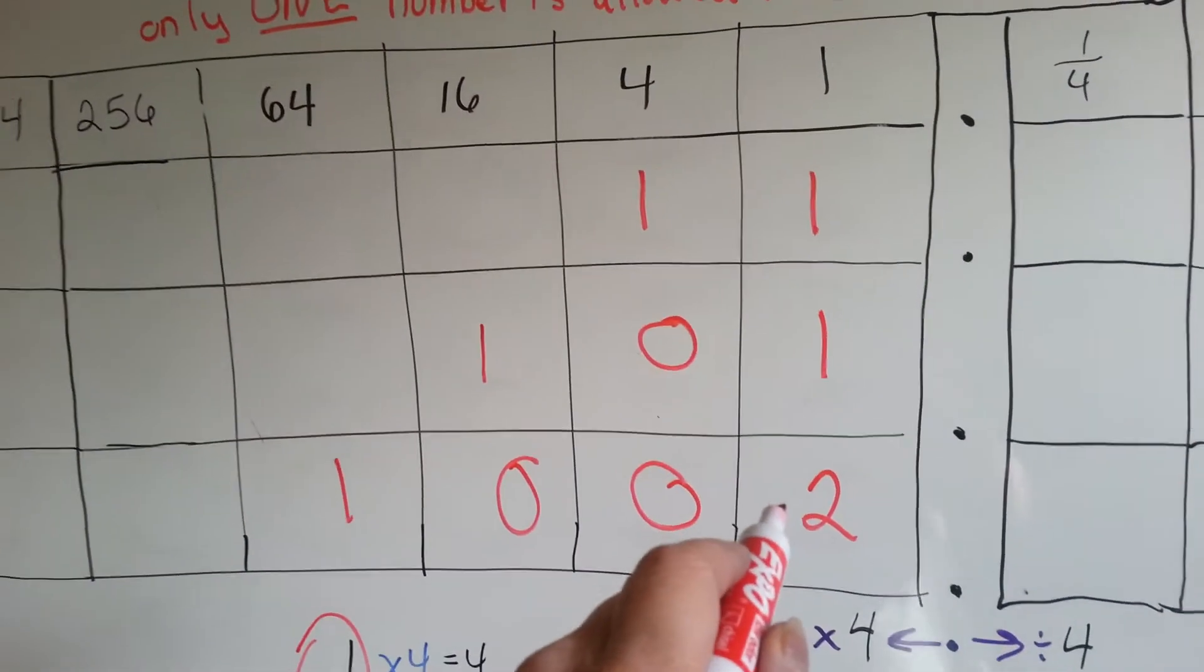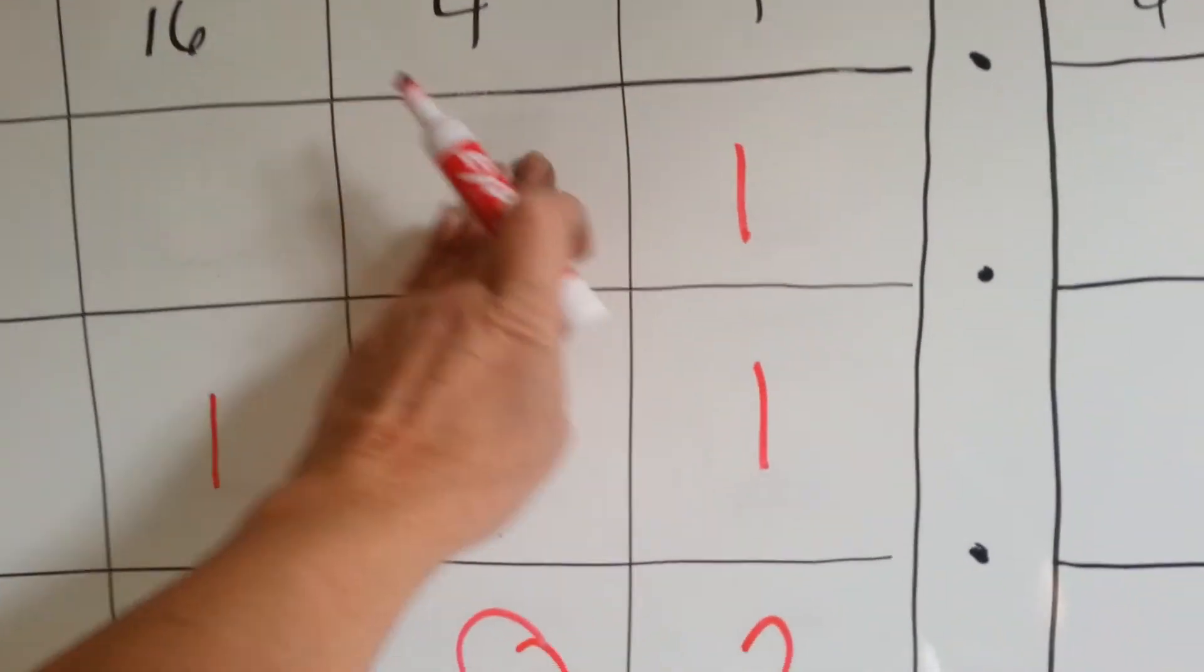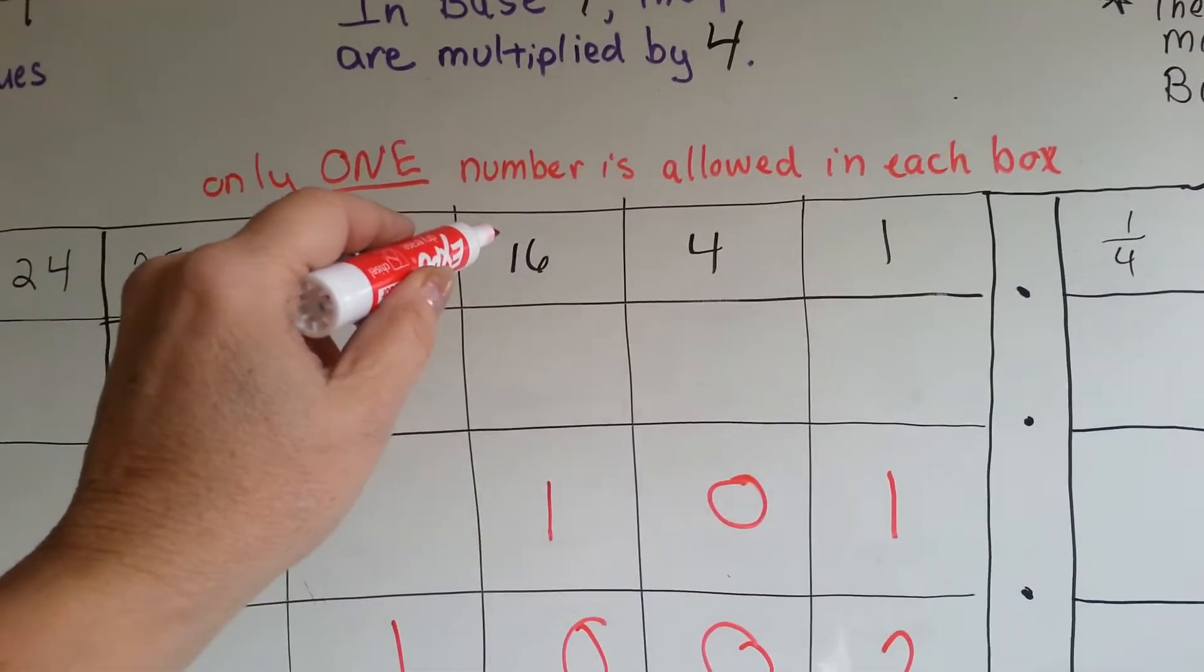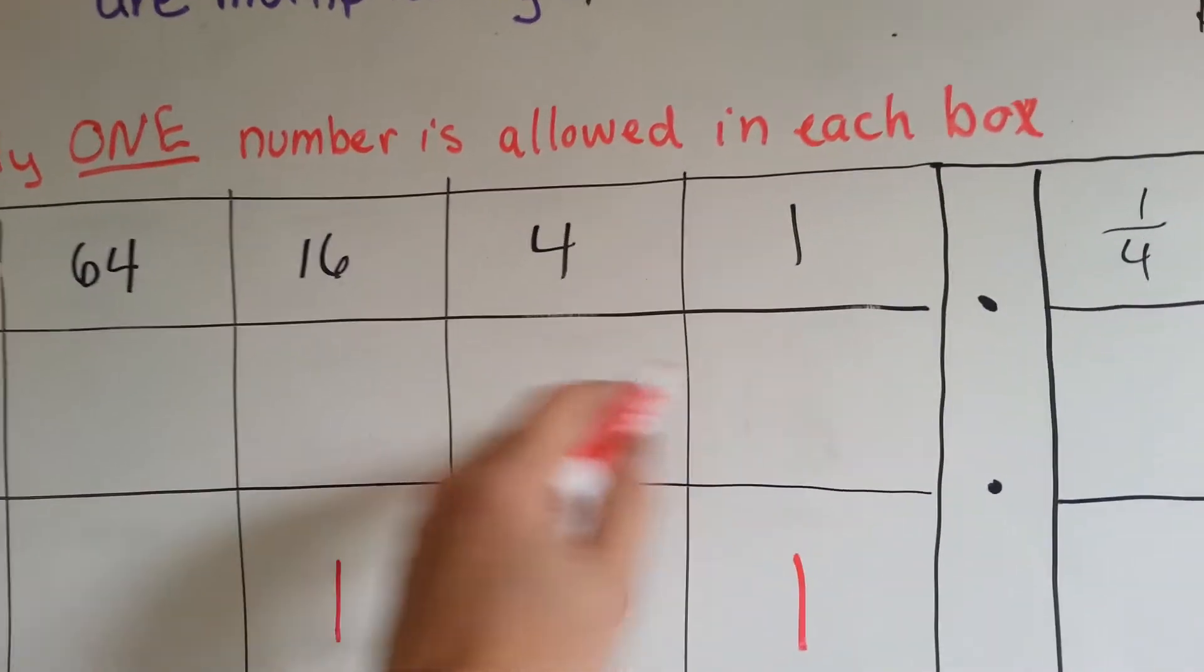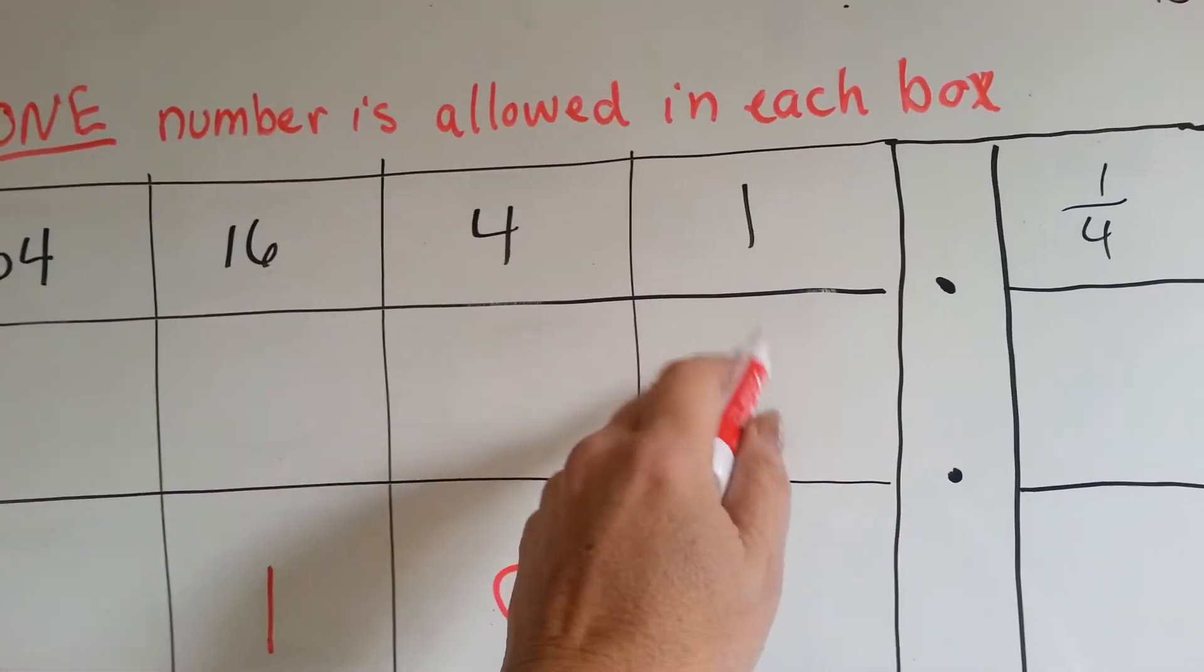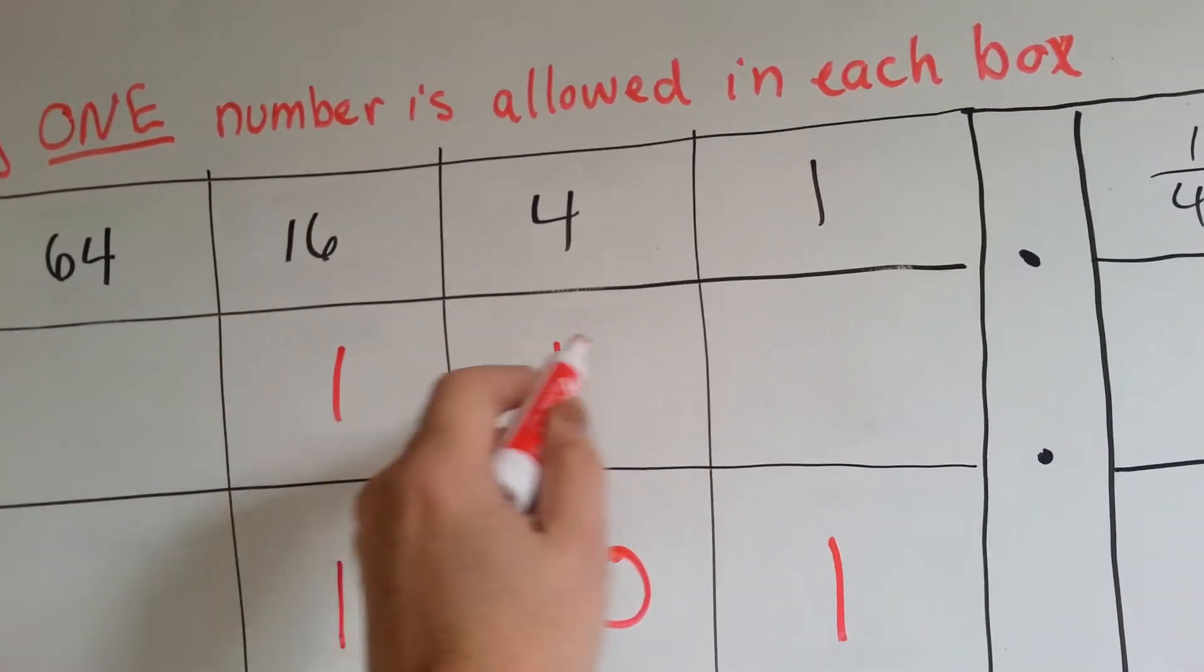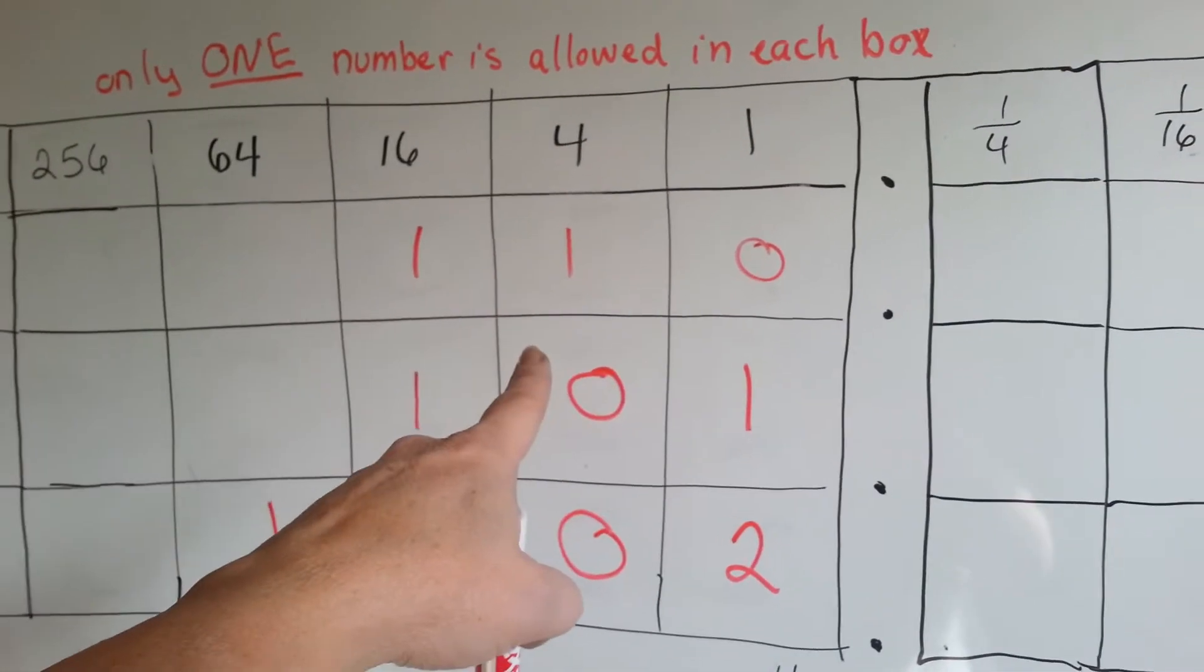Once this number gets to three, so let's say you wanted to make the number twenty, you couldn't put four ones here and one sixteen, because four ones would be a four. So the number twenty would be written like that. The minute you get to three, you have to go to that column.